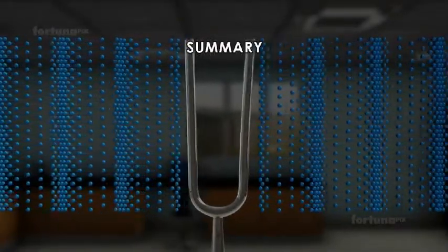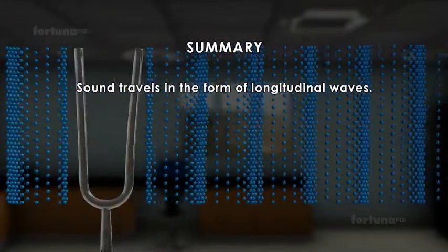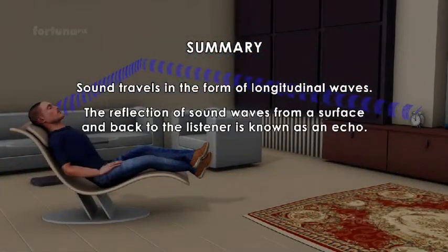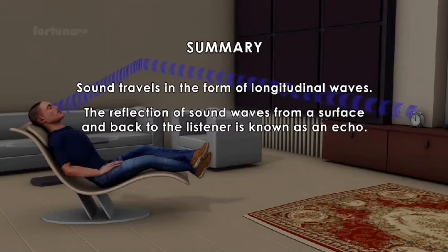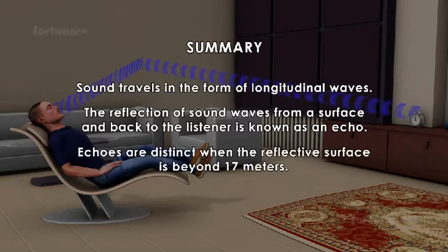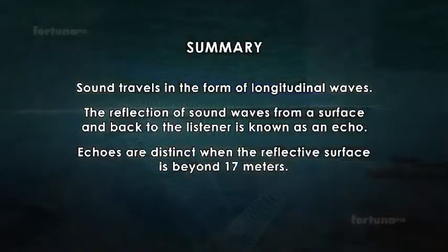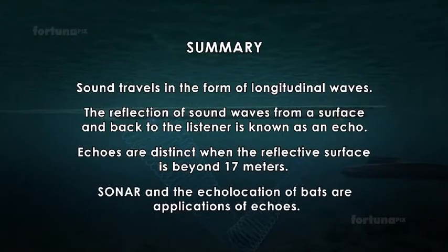Summary: Sound travels in the form of longitudinal waves. The reflection of sound waves from a surface and back to the listener is known as an echo. Echoes are distinct when the reflective surface is beyond 17 meters. Sonar and the echolocation of bats are applications of echoes.